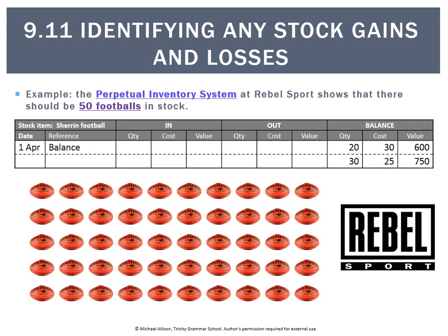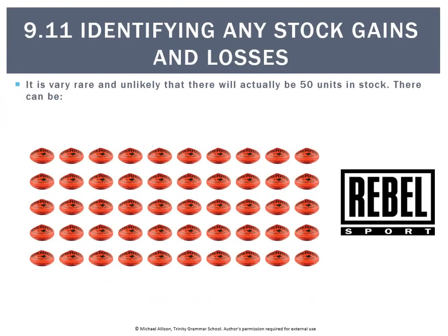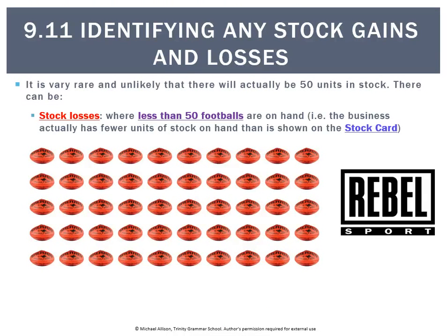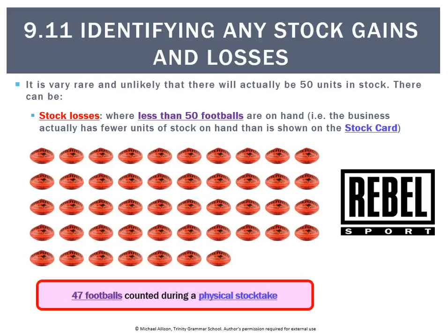But is that what's actually there? It's quite unlikely that there are actually exactly 50. What there could be is a stock loss — that's where there's less than 50 footballs on hand. Let's say we had 47. We need to explain that. That's a stock loss — how do we record it and how do we account for it?